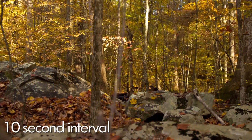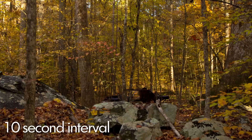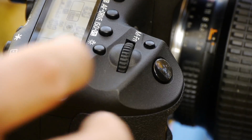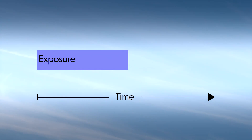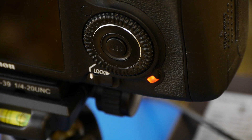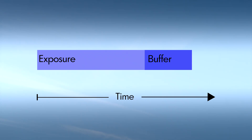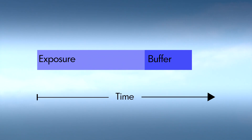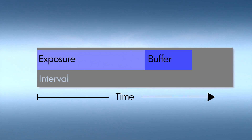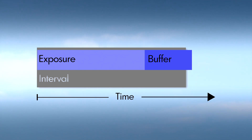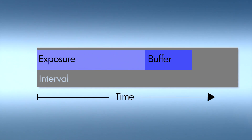Now let's set the interval — the time between shots. This parameter really affects how your time-lapse looks. When you take a shot with a DSLR the exposure takes a certain amount of time depending on settings and camera speed. Then before the image is saved to the memory card the camera processes the photo, storing it briefly in a temporary memory space called a buffer. The time it takes to process and transfer from the buffer to the memory card depends on camera and memory card speed. The interval you choose needs to be longer than the exposure and buffer time combined — otherwise you'll miss shots.